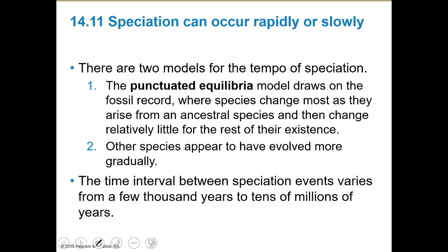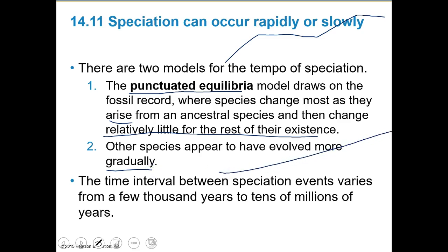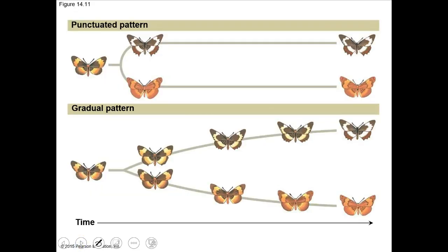There are two models of the tempo of speciation. Punctuated equilibria says that species change the most as they first arise and then change relatively little for the rest of their existence — lots of change, then no change, then maybe lots of change again. Other species appear to evolve more gradually — the gradual model says there are subtle changes happening over time leading to new species. The time interval can be a few thousand to tens of millions of years, depending on the case.